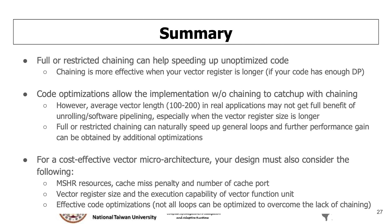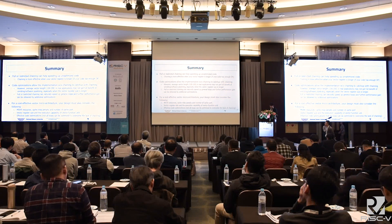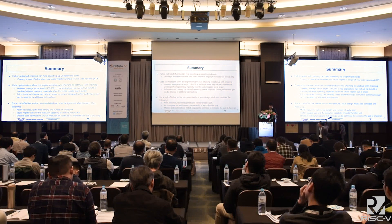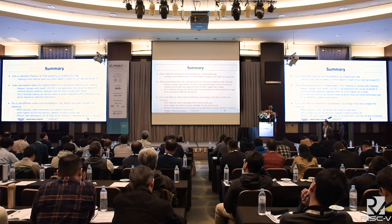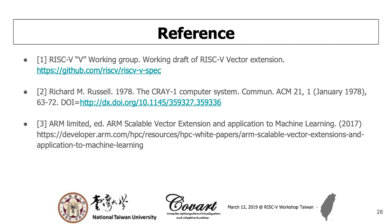For a cost-effective vector architecture, your design must consider the following factors: first, MSHR resources, cache miss penalty, and the number of cache ports — if your programs are bounded by memory bandwidth, you might need additional cache ports; second, vector register size and execution capability of the vector function unit; and last, effective code optimizations, because not all loops can be optimized to overcome the lack of chaining.